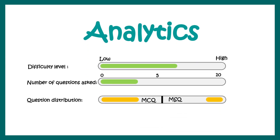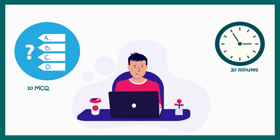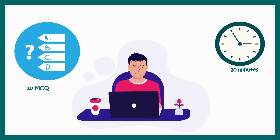This is the overall analytics. The difficulty level is moderate, and there would be only one question that can be asked every year. The question distribution is majorly in the MSQ section. Overall in this video, we'll solve total 10 questions. There would be 20 minutes and we would see last five years analytics, and based on that, we will solve five fresh questions.